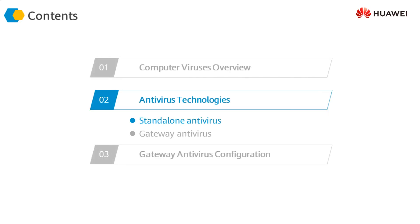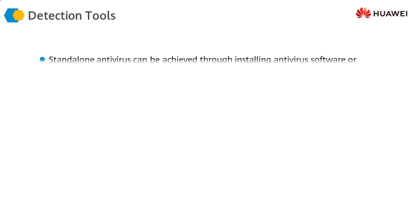There are two basic types of antivirus technologies: standalone antivirus technologies and gateway antivirus technologies. First, let's take a brief look at the standalone antivirus technologies.